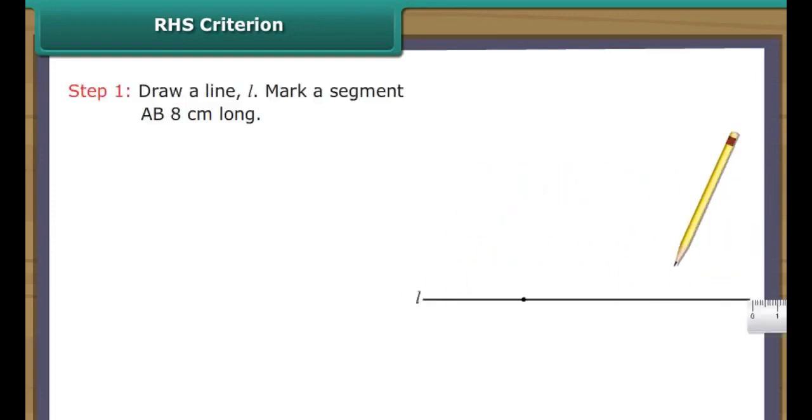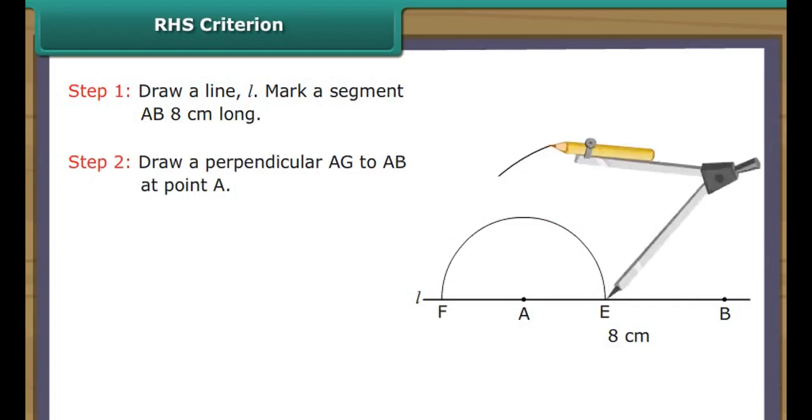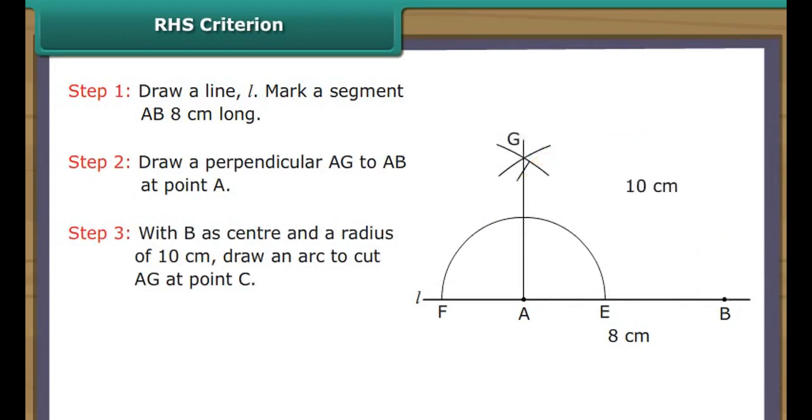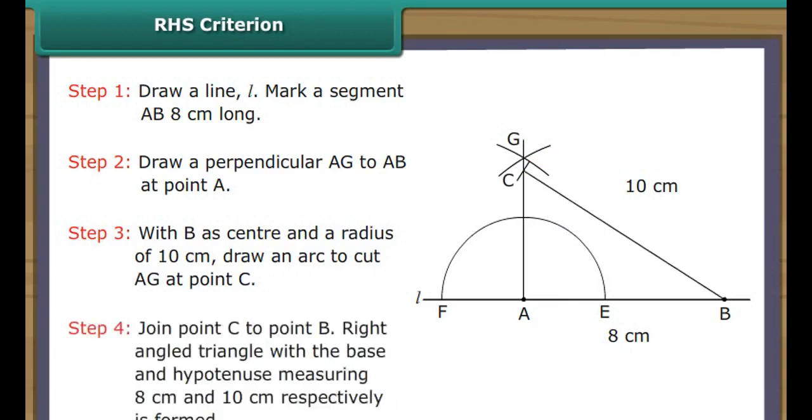RHS Criterion. Let us now draw a triangle one of whose angles measures 90 degrees and the base and hypotenuse are 8 cm and 10 cm respectively. Draw a line L. Mark a segment AB 8 cm long. Draw a perpendicular AG to AB at point A. With B as center and a radius of 10 cm, draw an arc to cut AG at point C. Join point C to point B. Right angled triangle with a base and hypotenuse measuring 8 cm and 10 cm respectively is formed.